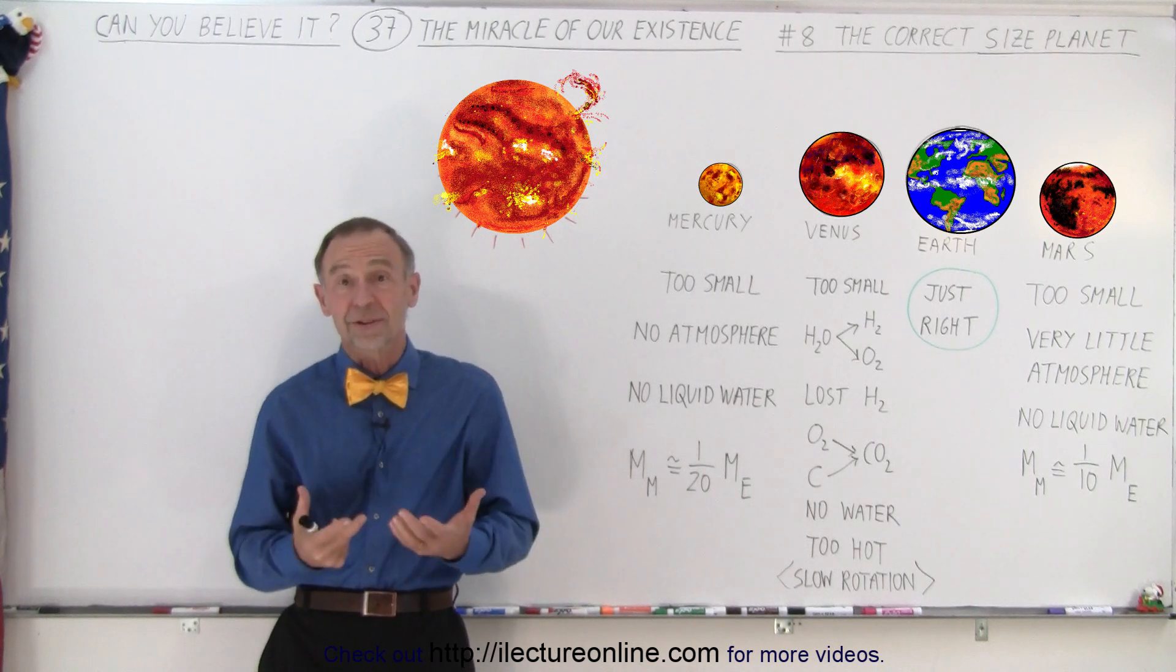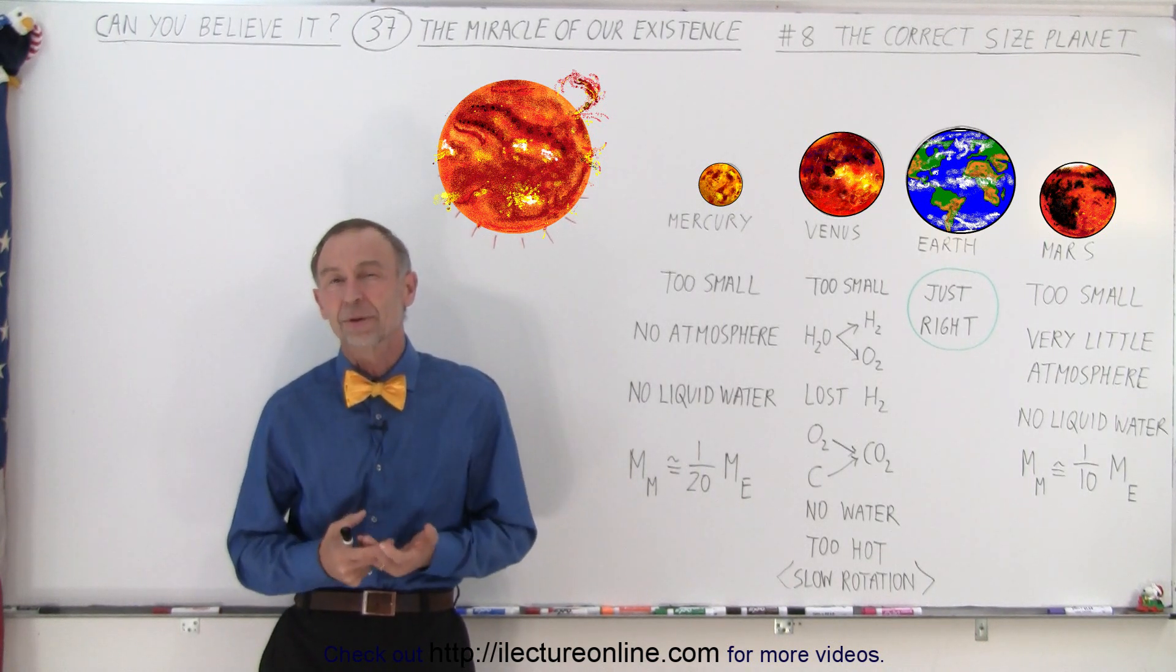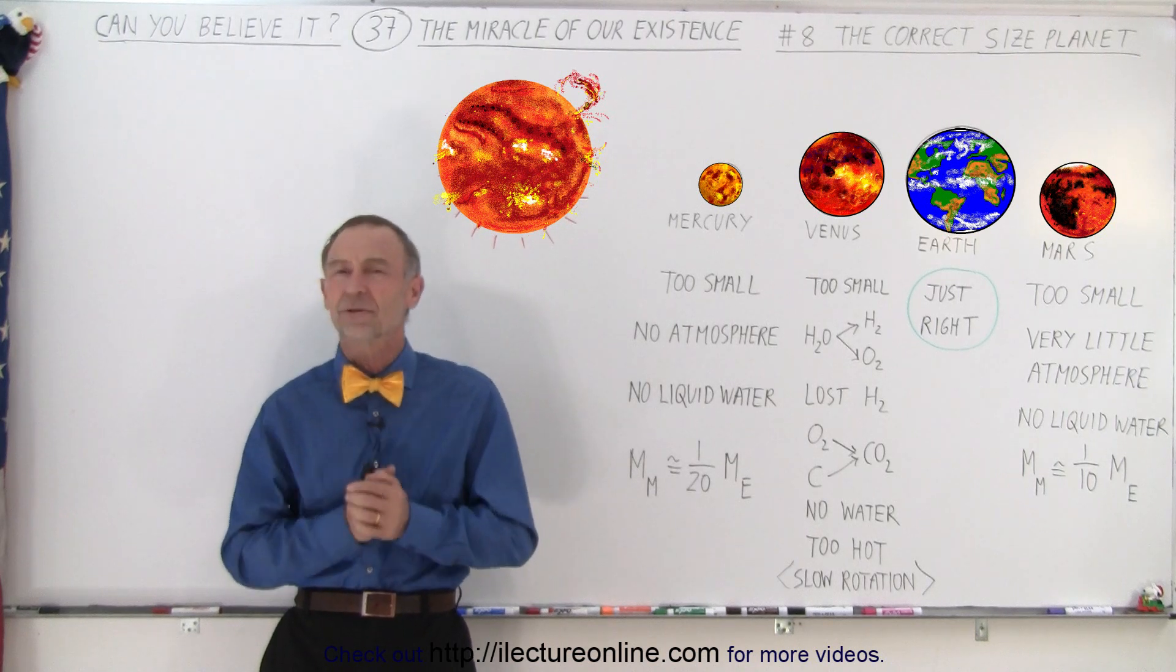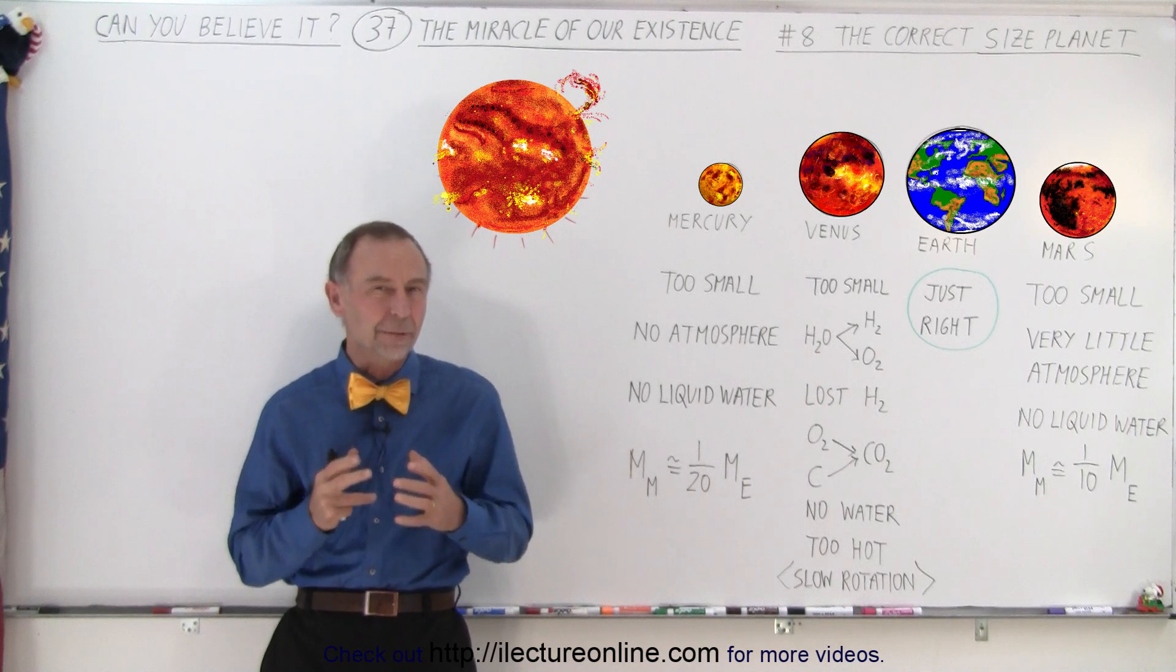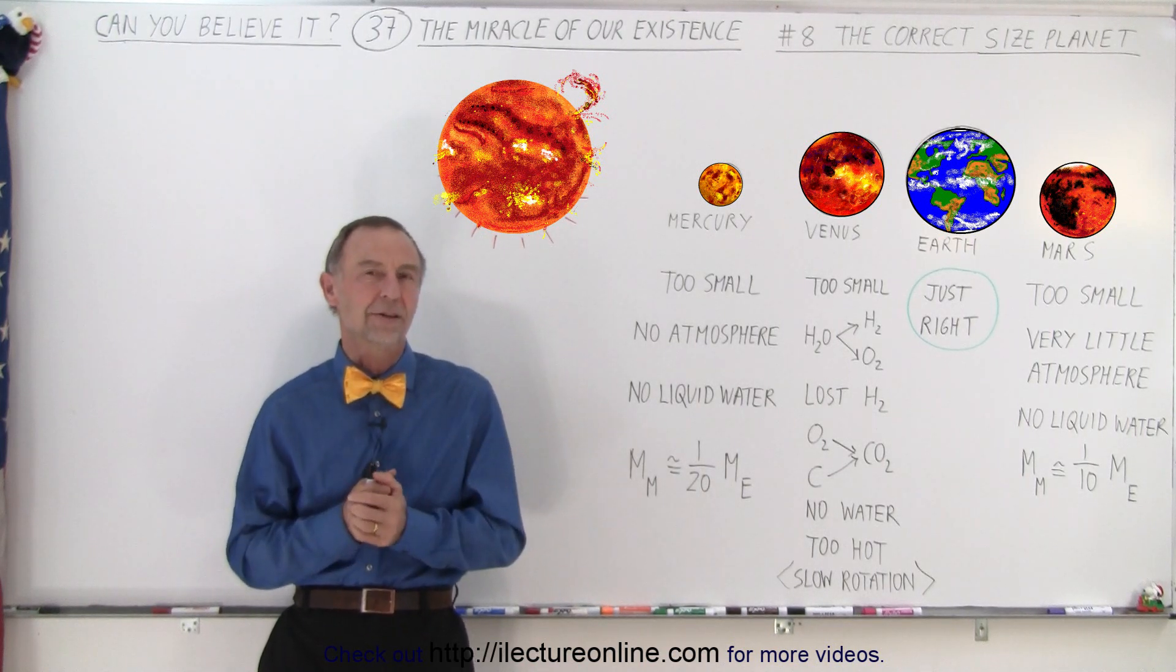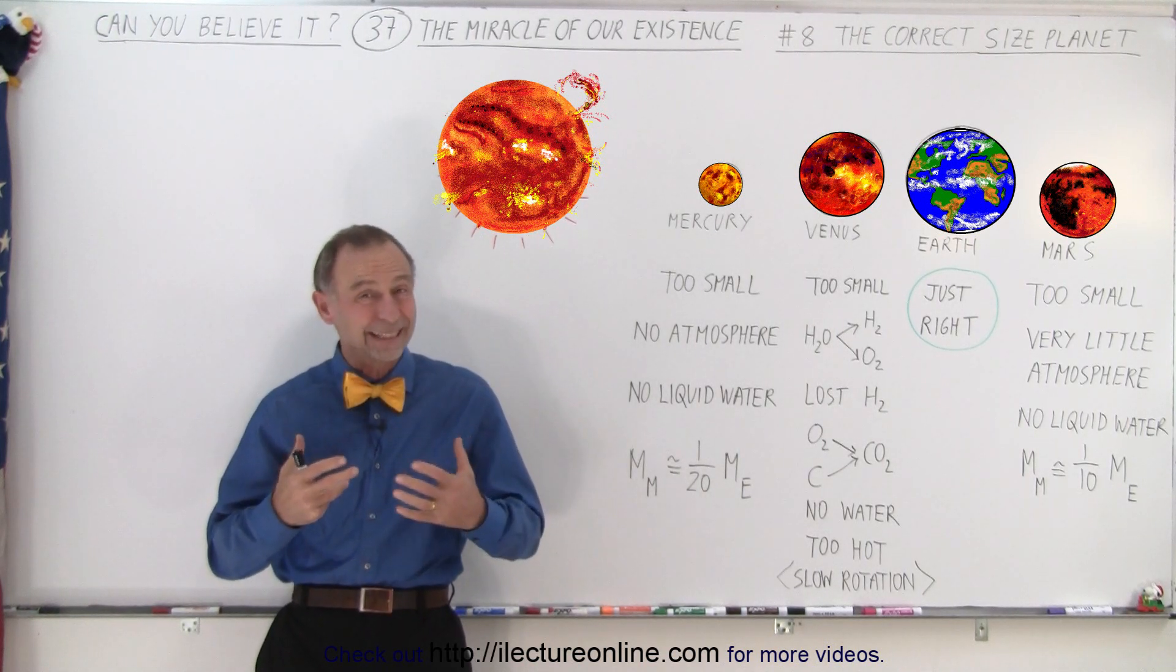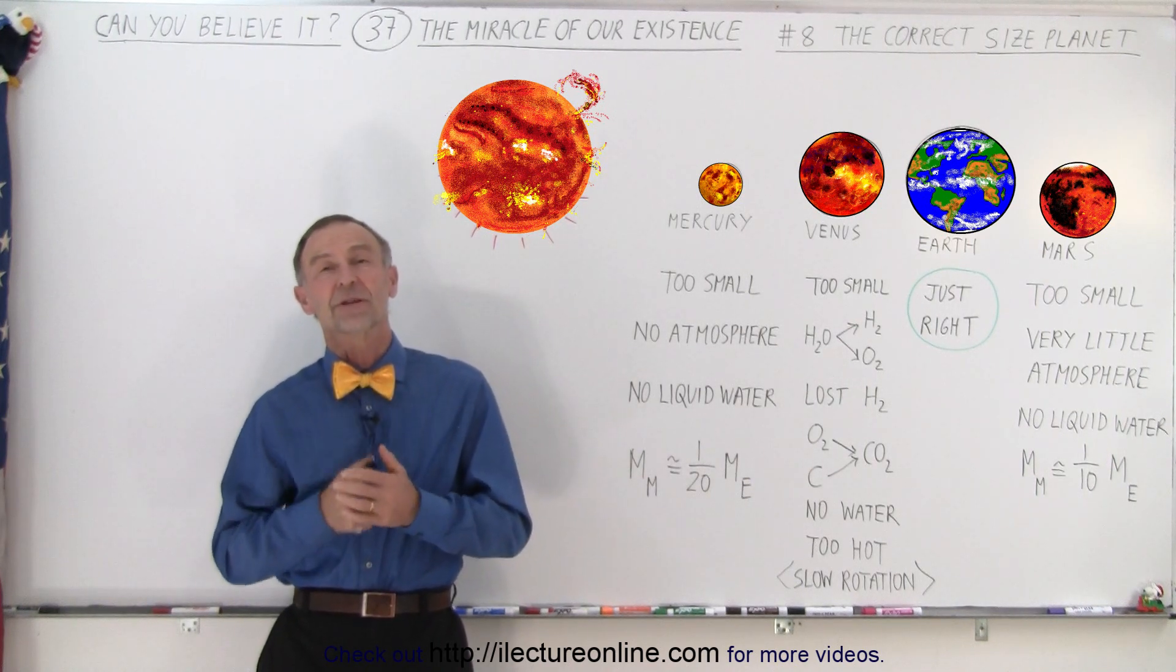So for life to exist, for us to exist, we needed a terrestrial planet. But not just any terrestrial planet. It had to be a planet of the correct size. There's kind of a minimum size for terrestrial planets that if they're not big enough, life on them is going to be virtually impossible.